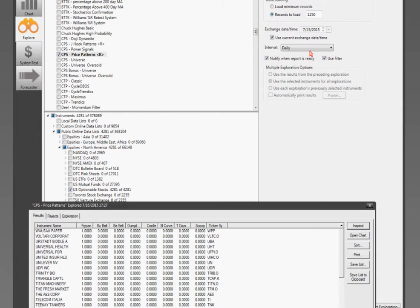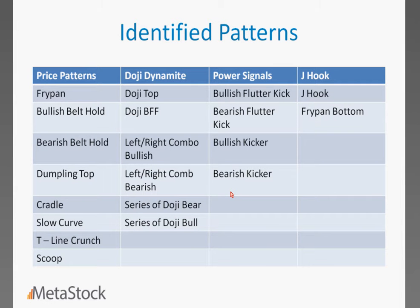Do you have a pre-built package to include Steve's candlestick patterns? I want to give you a list of all the different patterns available in the product — there are about 21 of them. They include fry pan, doji, bullish flutter kicks, J-hooks, and more. It's a pre-built package with about 20 or 21 indicators. Mansour asks: is there a trial version? Sort of — everything we sell has a 30-day money-back guarantee, so you can play with it. You do have to buy it up front, but if you don't like it, you can return it for a refund.